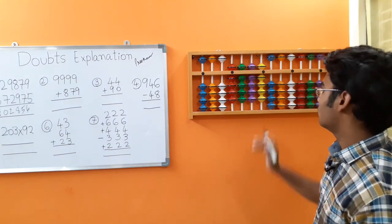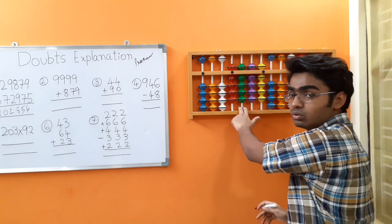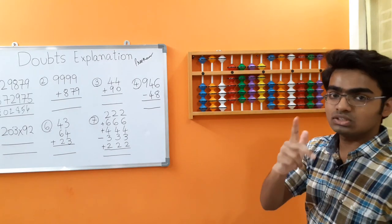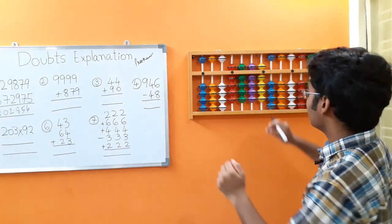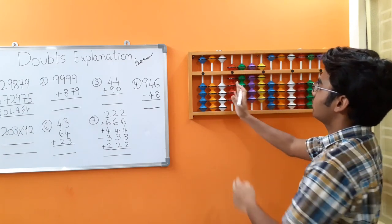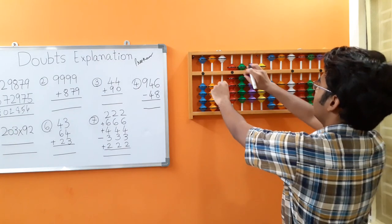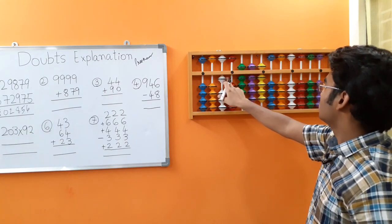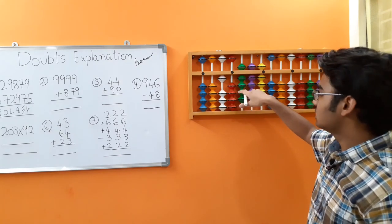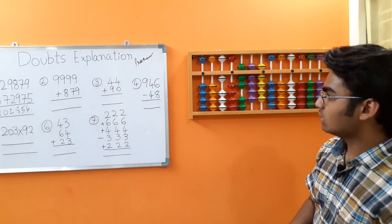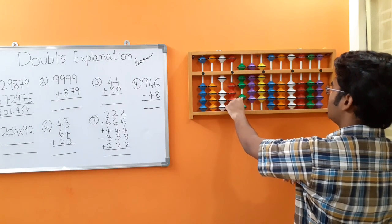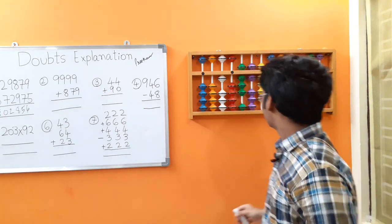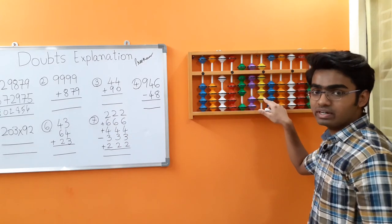We have to add 8 on the hundreds rod. We do not have enough beads at the lower end, so make use of big friends concept. 8's friend is 2, so add the boss 10. We cannot add 10 directly on this rod, so make use of the next rod — remove all the beads here and add 10 on the ten thousands rod, less 8's friend 2. Next, add 7: add the boss 10, less 7's friend 3. Then 9: add the boss 10, less 9's friend 1.